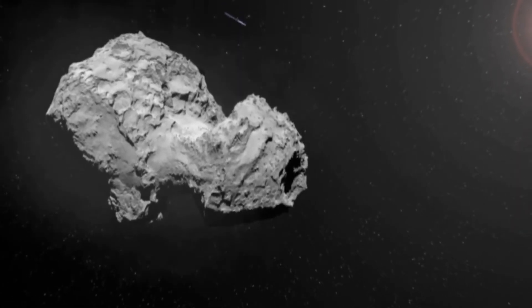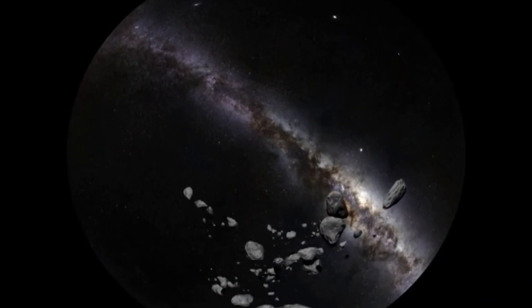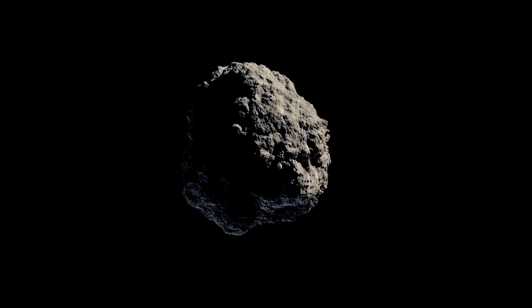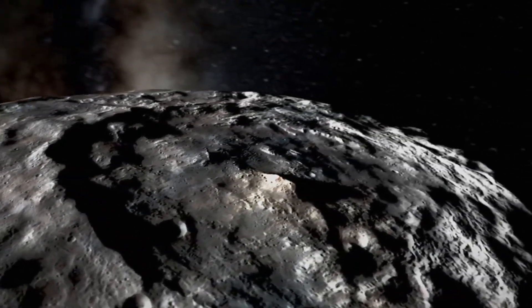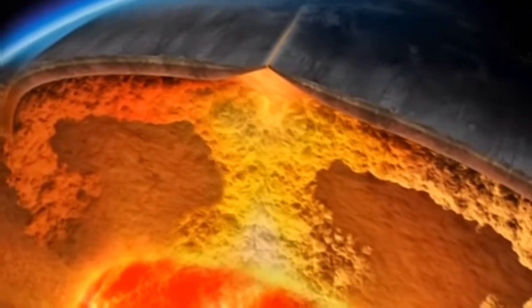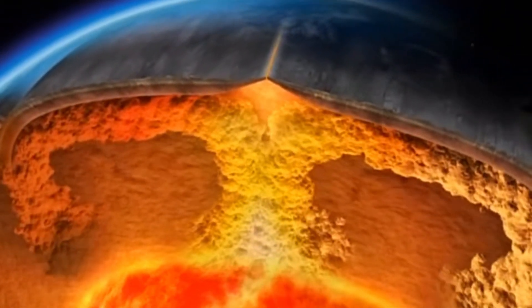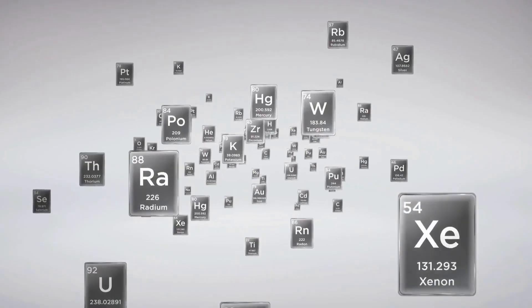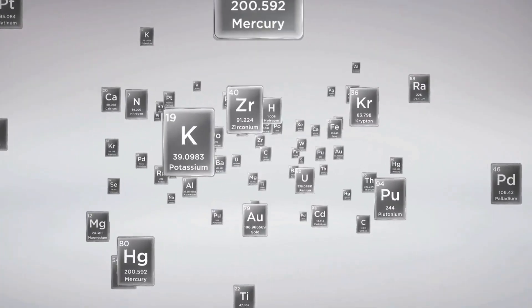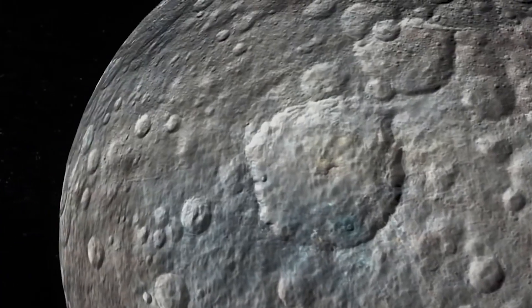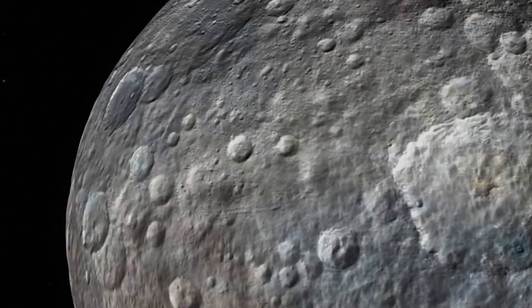One of the most significant mysteries surrounding Polyhymnia relates to its mass and density. In 2012, it was discovered that this celestial body possesses an incredibly high density of about 75.28 grams per cubic centimeter, which is astronomical compared to Earth's crust density of around 2.7 grams per cubic centimeter. Even the densest natural elements don't come close to matching this value.